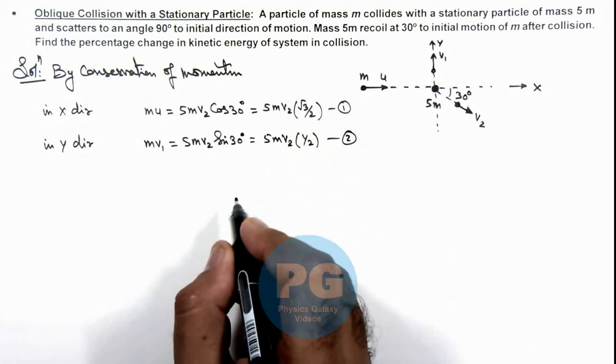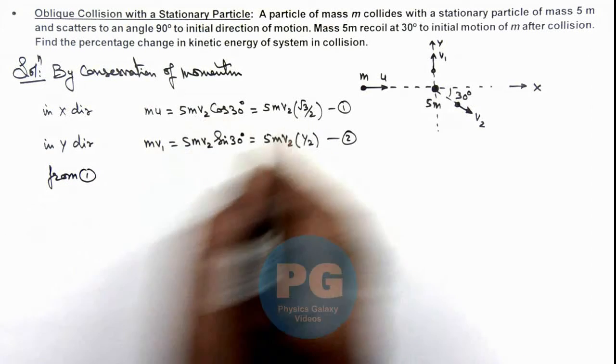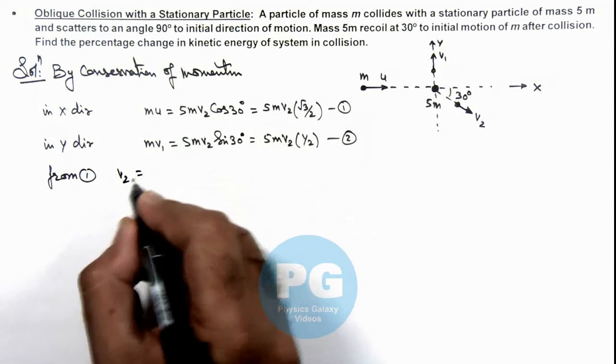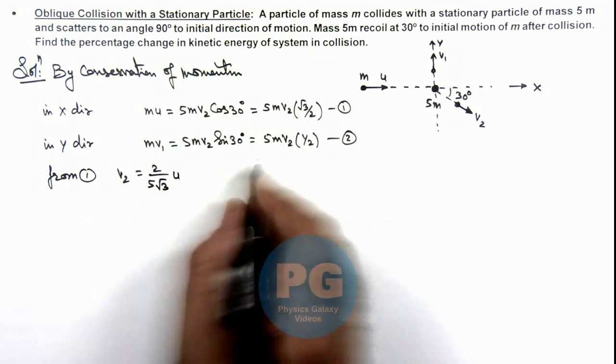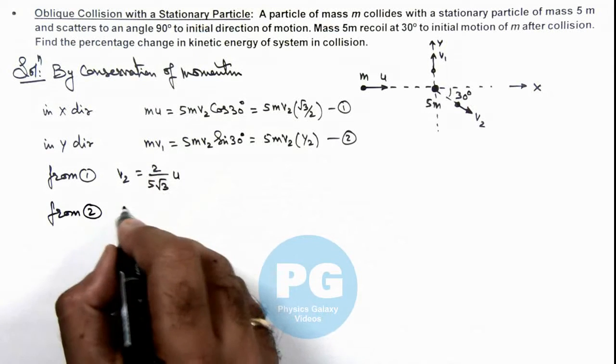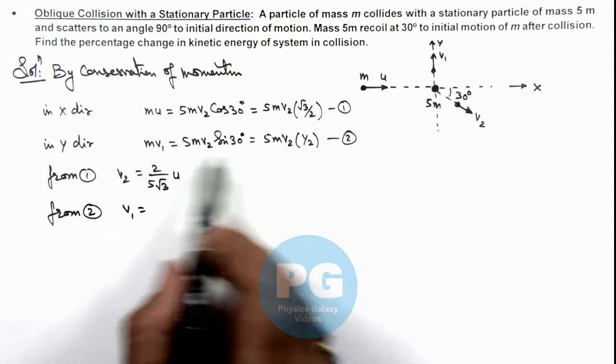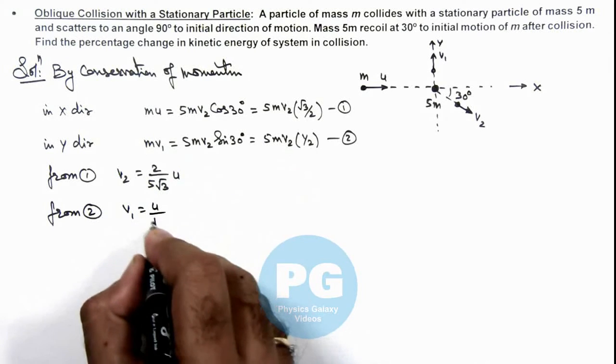So here, from equation 1 we can see the value of v2 we are getting is 2/(5√3)·u. And similarly from equation 2 we can see the value of v1 we are getting is 5v2/2, so this will be u/√3.